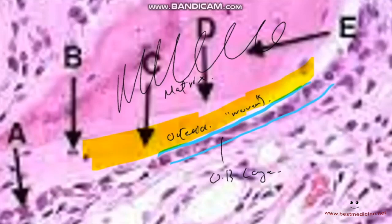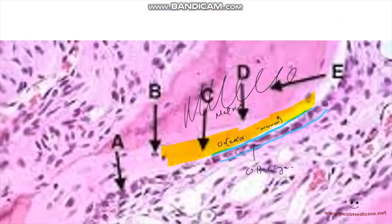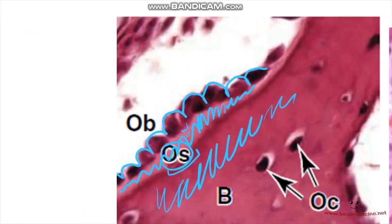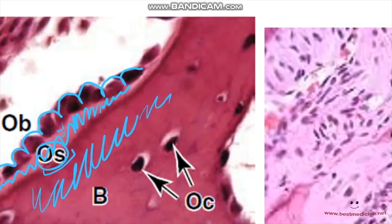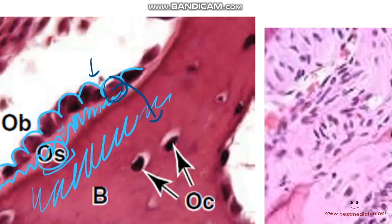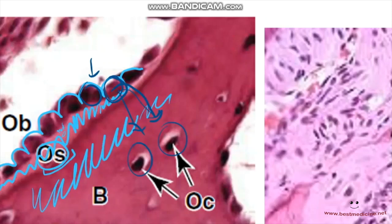The bone matrix contains osteocytes enclosed in lacunae. Importantly, osteoblasts are able to disengage from the simple cuboidal layer and become part of the bone matrix as the bone grows — jumping into the bone matrix as osteocytes, which are basically inactive or mature osteoblasts.